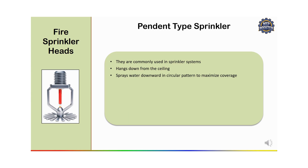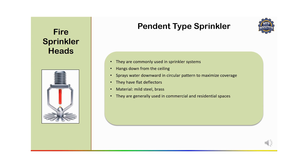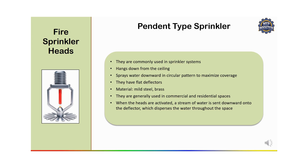The characteristics of pendant type sprinkler are that it provides broad coverage with a circular pattern. They have a flat deflector, normally made of mild steel or brass. They are generally used in commercial and residential spaces, and are ideal for offices, hotels, and factories.